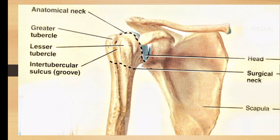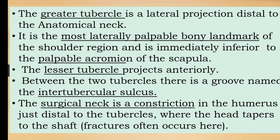The greater tubercle is a lateral projection distal to the anatomical neck. It is the most laterally palpable bony landmark of the shoulder region, immediately inferior to the palpable acromion of the scapula. The lesser tubercle projects anteriorly. Between the two tubercles is a groove named the inter-tubercular sulcus. The surgical neck is a constriction just distal to the tubercles where the head tapers to the shaft — fractures often occur here.